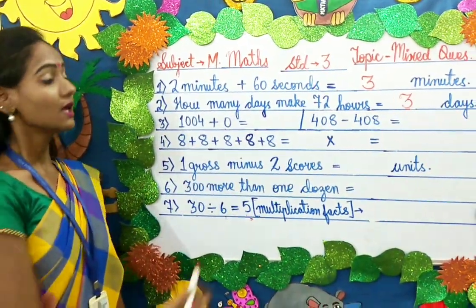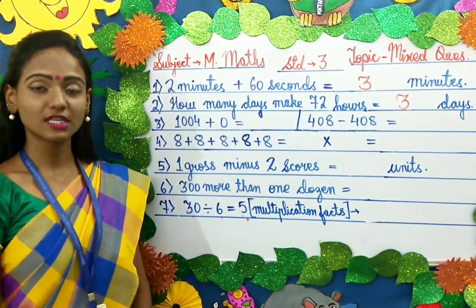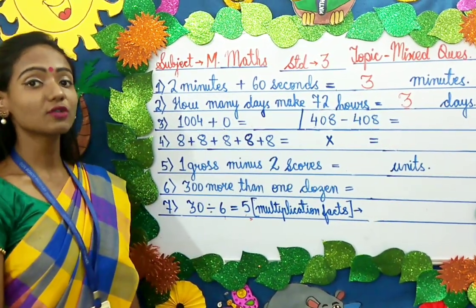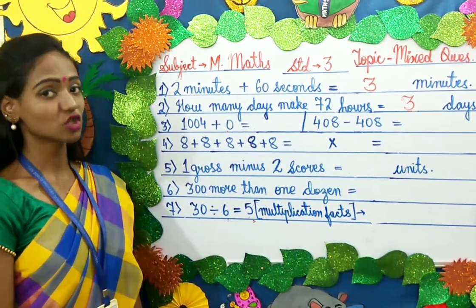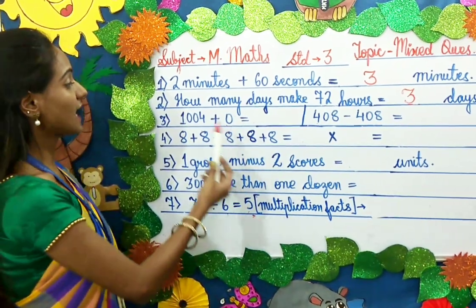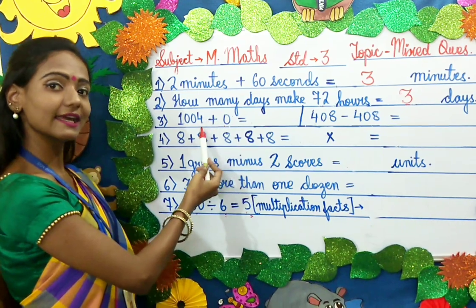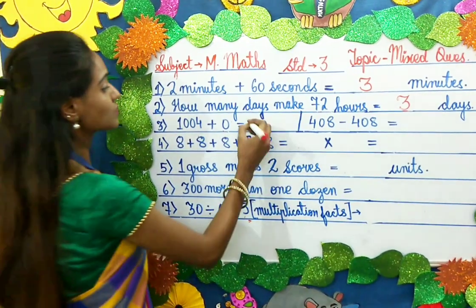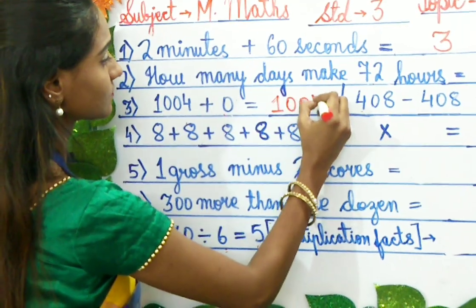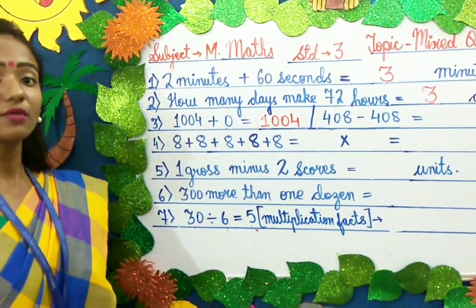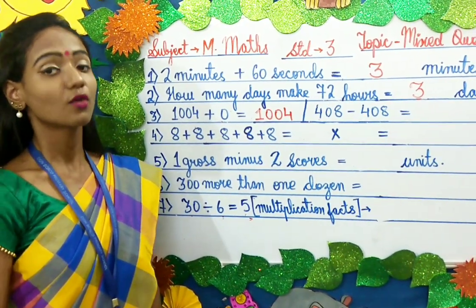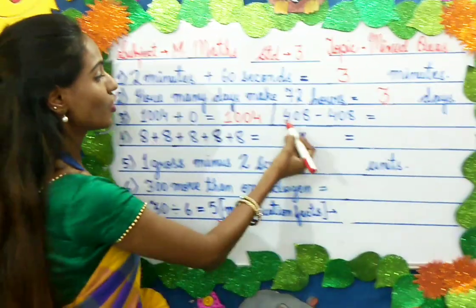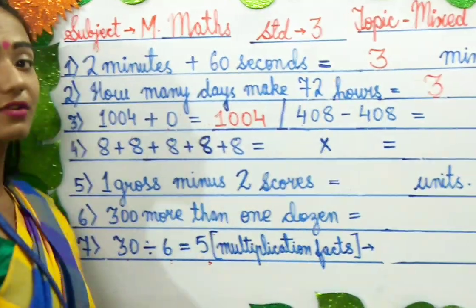Moving on to the third question. In this question, we are going to see the properties of addition as well as subtraction. For addition: when we add any number to 0, we get the number itself. So 1,004 plus 0 equals 1,004. For subtraction: when we subtract a number by itself, the answer is 0. So 408 minus 408 equals 0.